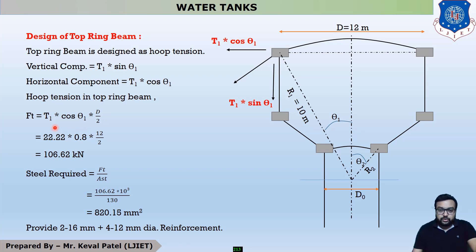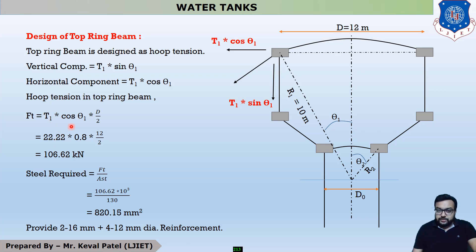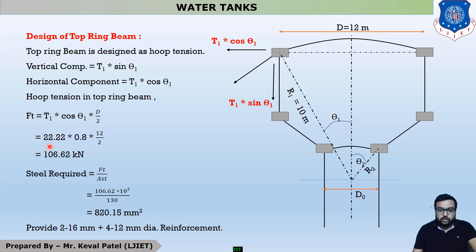Putting in the values: t1 = 22.22 kN (from the top dome design step), cos(theta1) = 0.8, and d/2 = 12/2 = 6. So ft = 22.22 × 0.8 × 6 = 106.62 kN. This is the calculation of the tensile force ft.